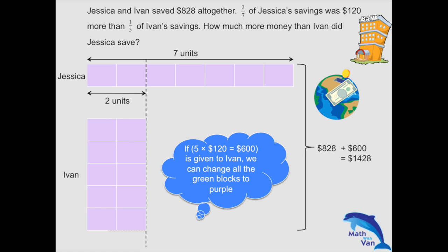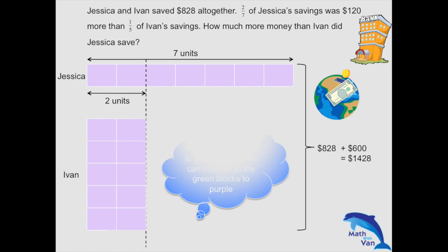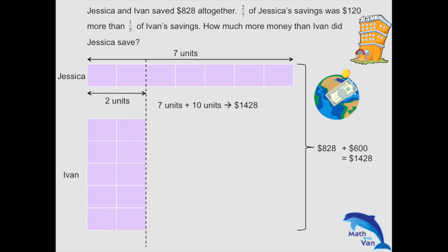Now, with all equal blocks, we can solve for the value of one unit. So 7 plus 10 gives us 17 units, which equals $1,428. Therefore one unit gives us $84.